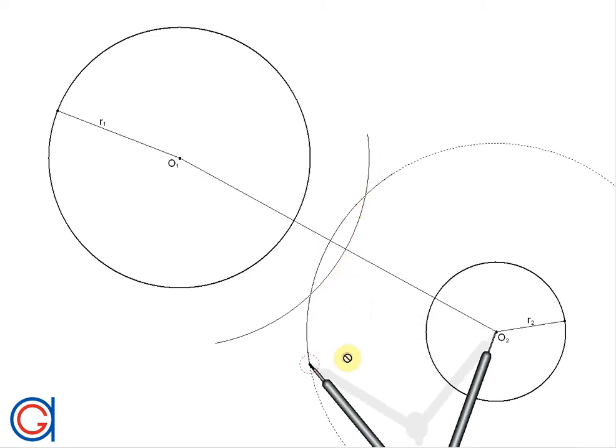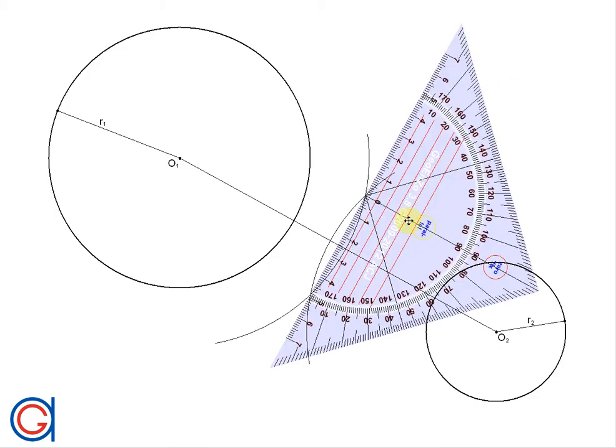And now where these two arcs intersect we are going to join them using a line. And where it cuts the line O1, O2 will be the midpoint M.